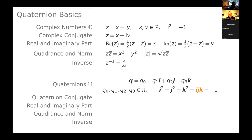So what are quaternions? I don't assume familiarity, but I assume that you know what a complex number is. A complex number z is the sum x plus iy, where x and y are real numbers and i is the complex unit which squares to minus one. There's a notion of a complex conjugate, which I denote by a bar — it's just x minus iy — and we have real and imaginary parts.